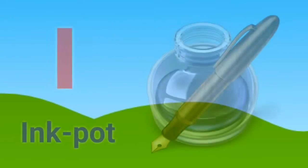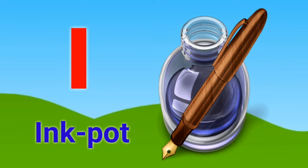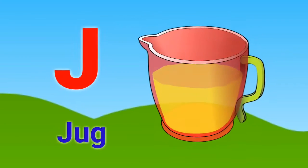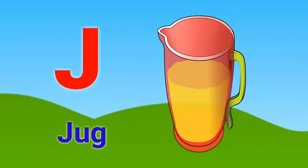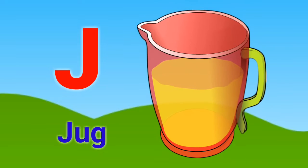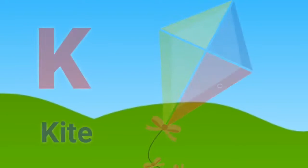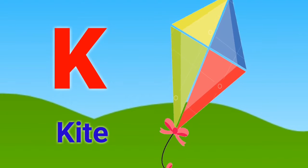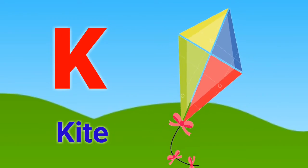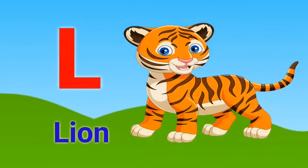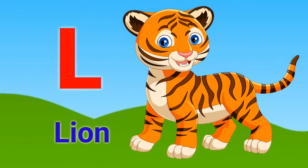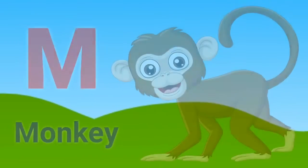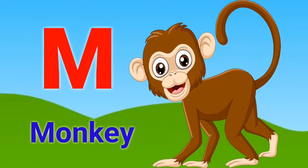I for input, J for jag, K for kite, L for lion, M for monkey.